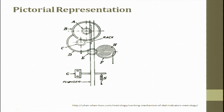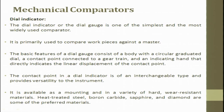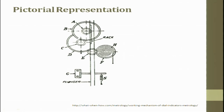The plunger moves; there is a spring loading and the displacement will move the coil spring — you have a rack. From the rack you have a pointer which is displayed on a dial gauge. The contact point in a dial indicator is of an interchangeable type and provides versatility to the measurement. The contact point which touches the workpiece is available in a variety of hard wear-resistant materials: heat treated steel, boron carbide, sapphire, and diamond are also used at the contact tip.